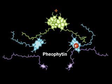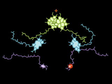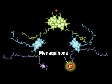Because the chlorophyll loses an electron, it is now positively charged. The excited electron passes to another accessory pigment, menaquinone, exciting it.